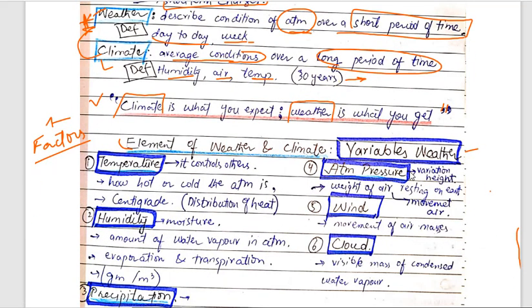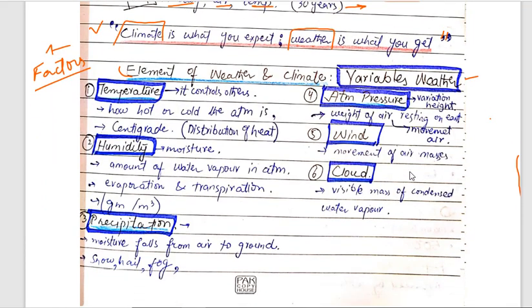Temperature controls both weather and climate. When temperature is high, heat causes evaporation; cold air moves in, and ultimately winds start running. If the climate is slightly cold, the movement of winds and air is also controlled by temperature. Temperature is the key variable — it defines how hot or cold the atmosphere is.